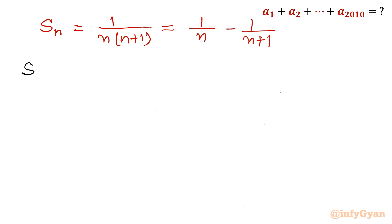So S, I will write again: 1/(1×2) + 1/(2×3) + 1/(3×4) and so on. And last number which I will write in this sequence, that would be 1/(2010×2011).